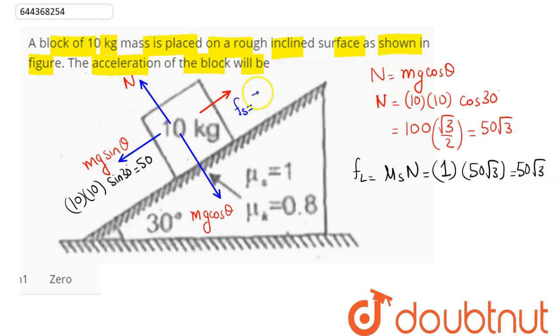The static friction will act in upward direction of magnitude 50 Newton as static friction is a self-adjusting force with maximum static friction available as 50 root 3 out of which only 50 Newton is sufficient.